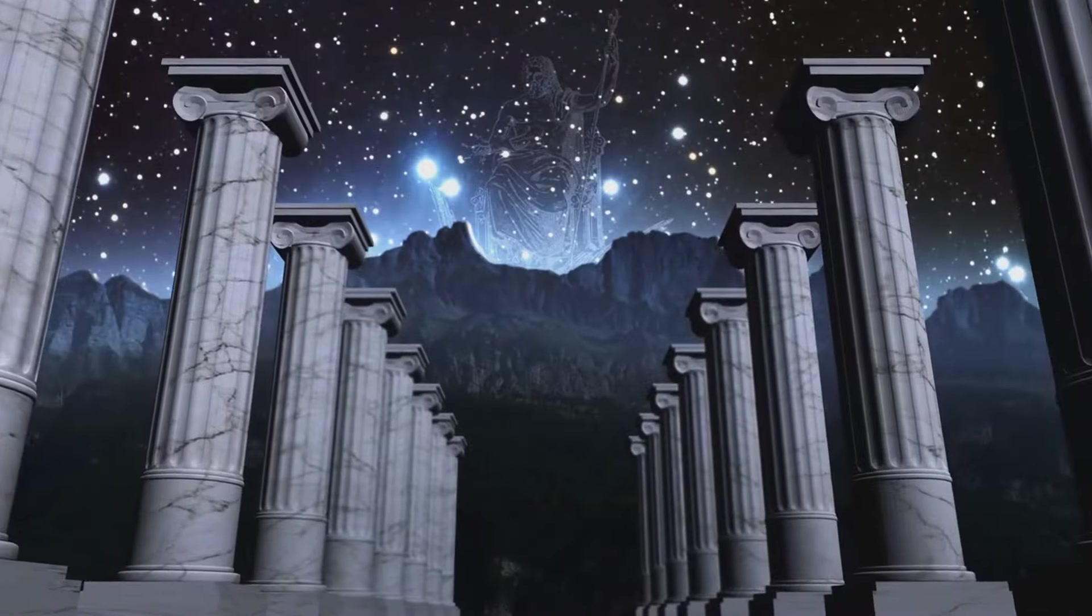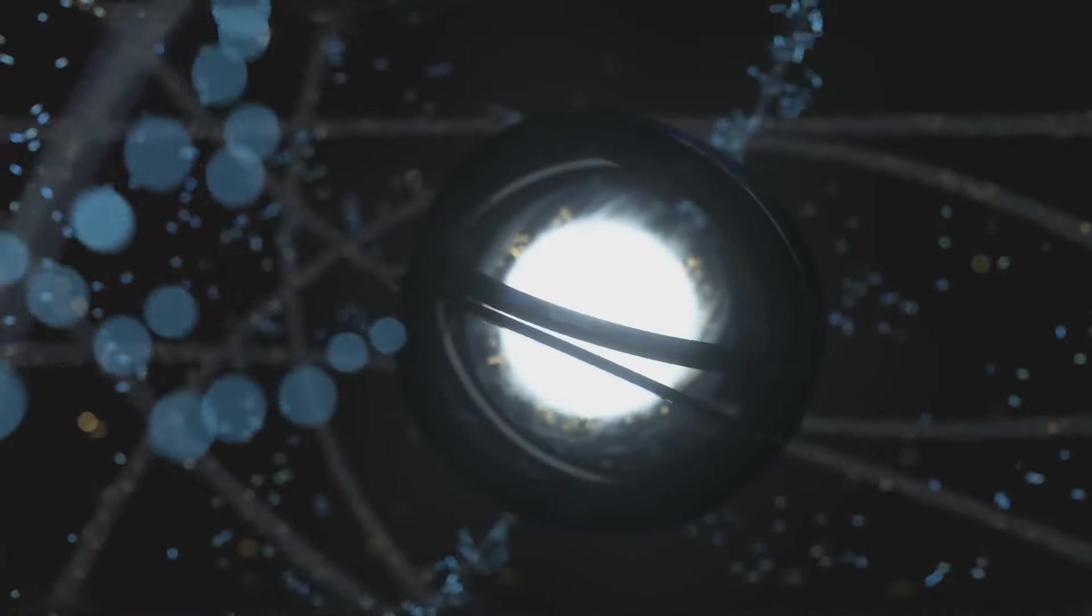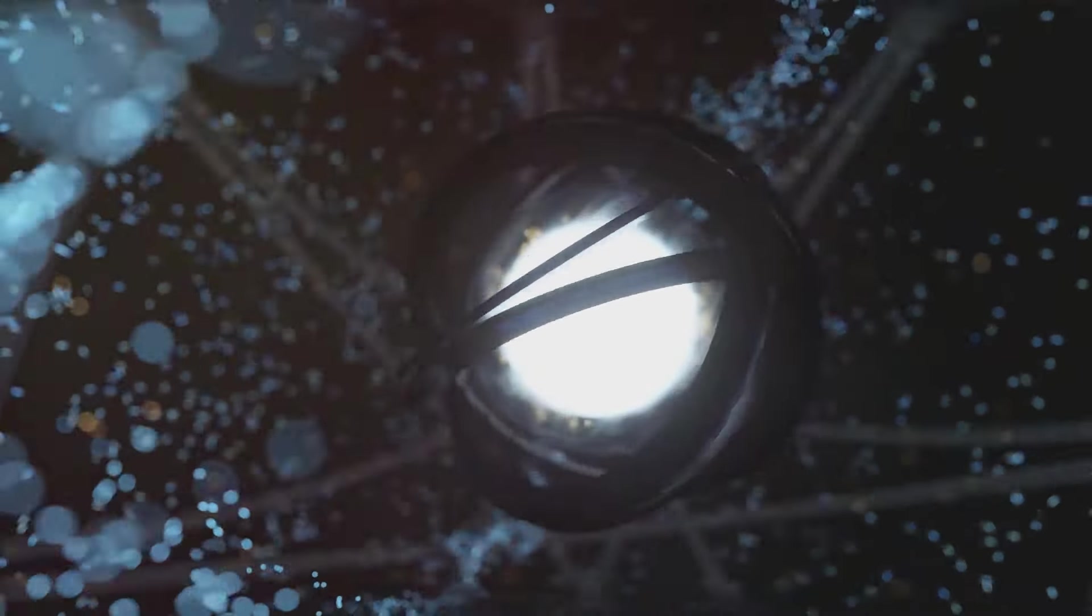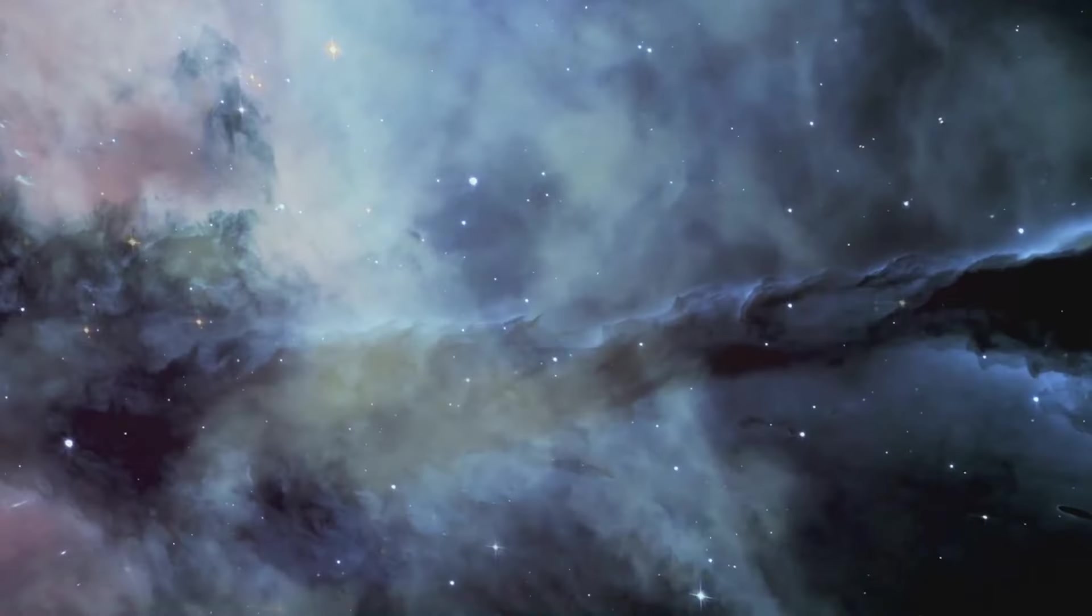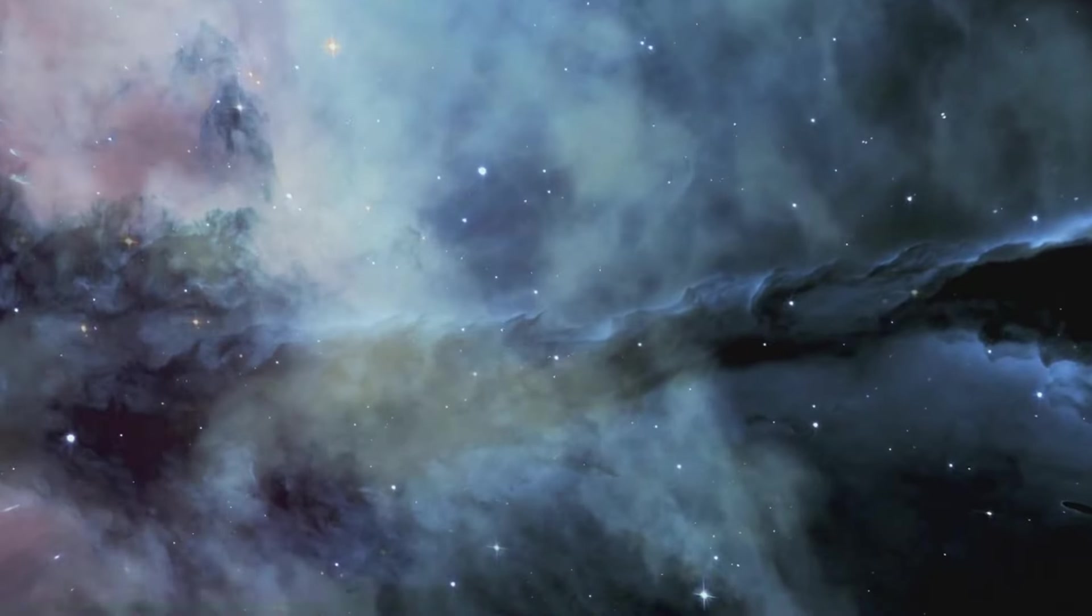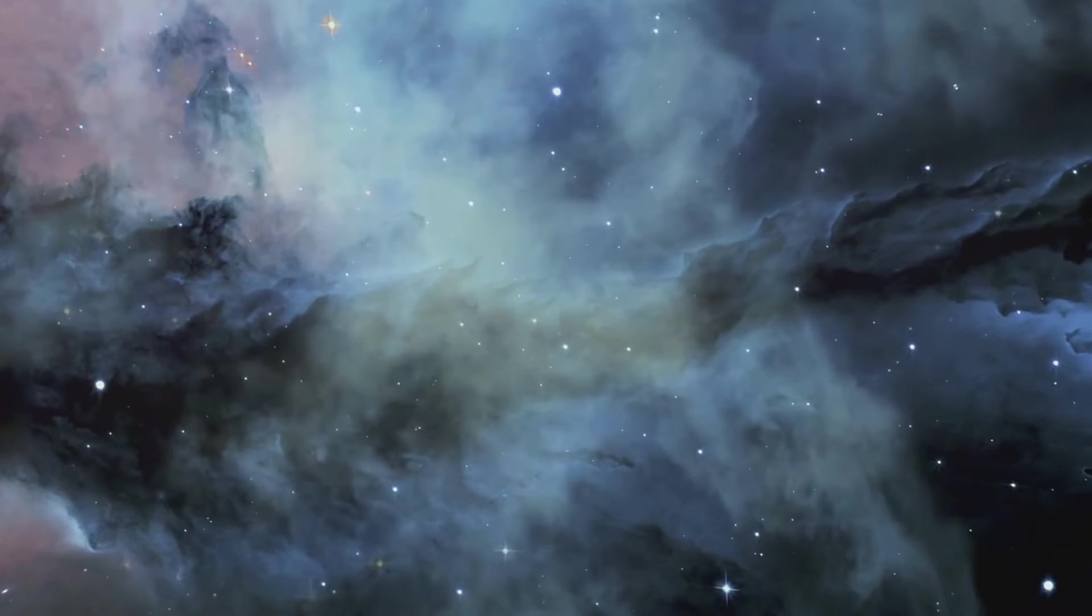The demiurge, in its act of creation, attempts to replicate these forms in the material world. It uses the forms as templates to shape the physical universe. However, the physical realm is inherently flawed and imperfect, resulting in a less-than-perfect copy of the forms. The material world can never fully capture the perfection of the forms.